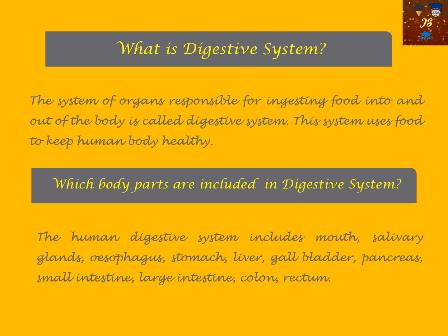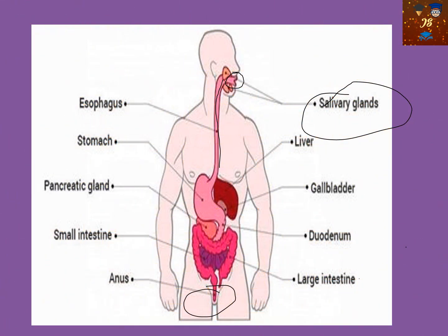We will go through each and every part slowly in this series. This is the diagram of the human digestive system. The digestive system starts from the mouth, which contains the salivary glands. From there, this long tube-like structure is called the esophagus, which ends in the stomach.